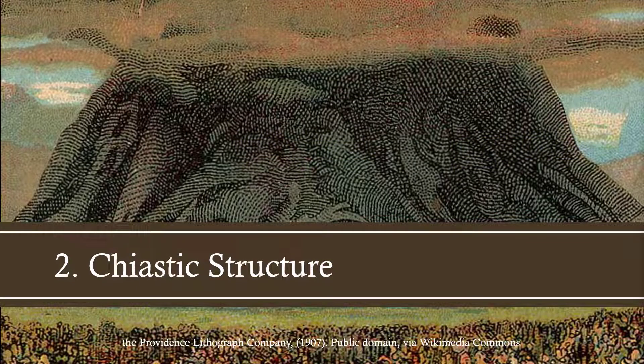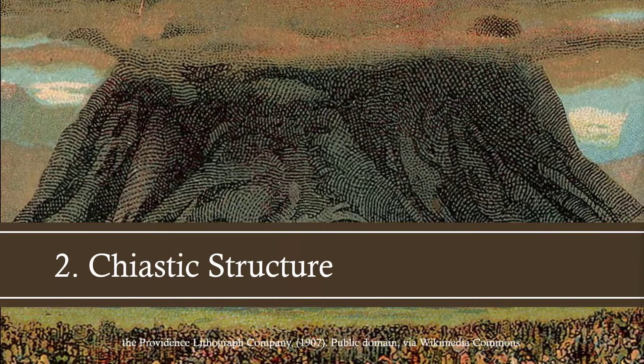Now let's talk about the idea of a chiastic structure. Chiastic structure is a literary device. Authors use it to give text structure. It helps focus the reader or the listener to the point of the main idea of what's being presented. It's found in literature from around the ancient Near East — it's everywhere in the Bible, both Old Testament and New. A great example, if you want to go look it up, is the Tower of Babel.